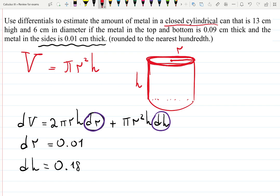That is because we take into account the thickness of the top and the bottom. Each is 0.09, so 0.09 plus 0.09 equals 0.18. That is the amount of metal if the metal in the top and bottom is this thickness.